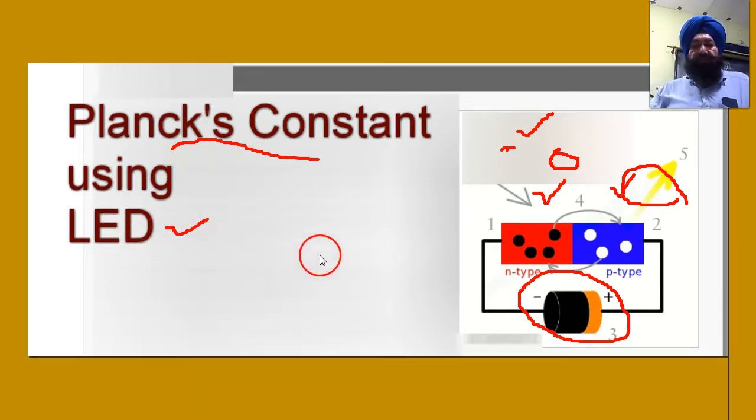It's not necessary that every NP semiconductor emits energy in the form of light. You have to have a special N-type semiconductor, you have to have a special P-type.